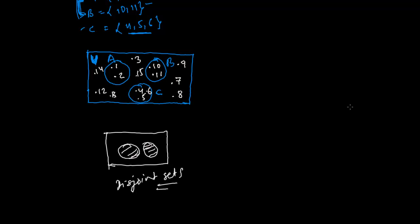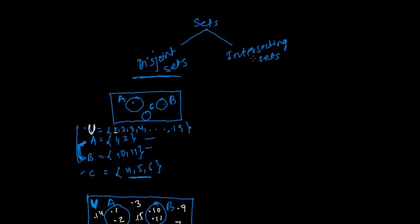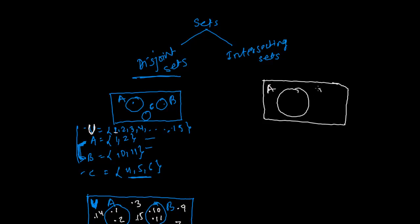Now let's talk about what intersecting sets are. From the name itself you get the idea — something is intersecting, something is common between the sets. In a Venn diagram you will always get something common. Suppose we have set A and set B. If some elements are members of A and also members of B — there are some common members found in both A and B — such a type of set is called an intersecting set.